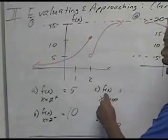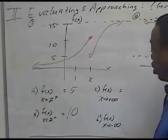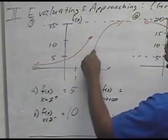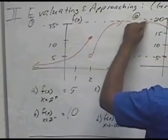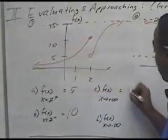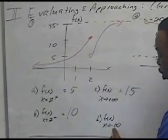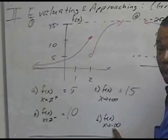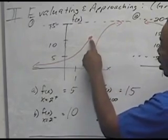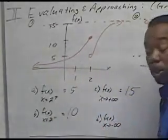Next, this asks: as I travel the function to positive infinity (to the right), where do I end up? I follow the function to the right, jump down, and keep following — the highest I can go as I go to the right is 15. For negative infinity (to the left), I follow the graph left, jump up, and keep going left, getting closer and closer to the x-axis, which is y equals 0.